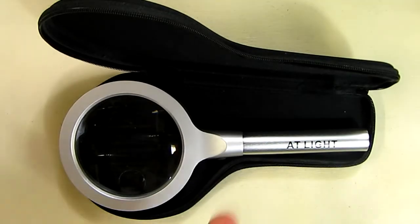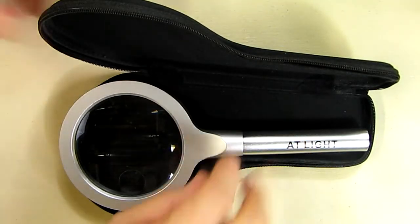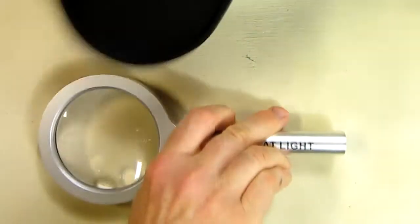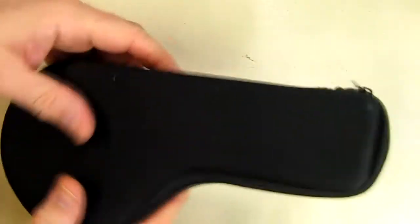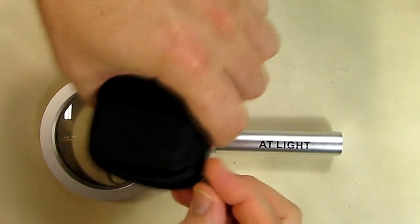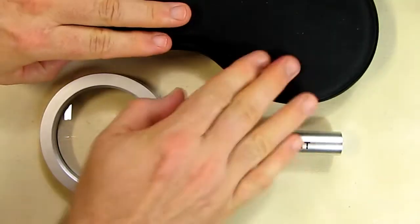Here's what it comes with: the light itself and a nice little storage case with a zippered closure that goes all the way around to keep it protected.